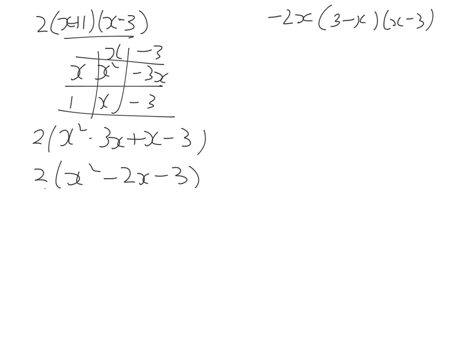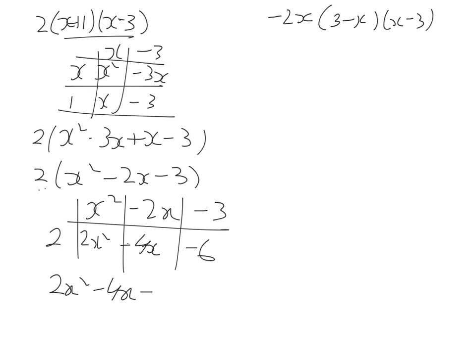And then we expand with that 2. So once again, we can go through the same rigmarole of putting this into a table. x squared minus 2x minus 3. So here we have 2x squared minus 4x minus 6.